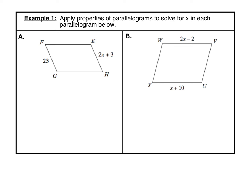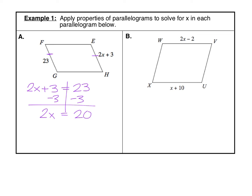Let's practice that property now where we can solve for X. In example one, we're given some parallelograms and asked to solve for X using properties of parallelograms. Notice that side FG and side EH are opposite sides, and we know that in a parallelogram opposite sides are congruent. So we set those two expressions equal: 2X plus 3 equals 23. Subtract 3 from each side to get 2X equals 20, then divide by 2 to get X equals 10.